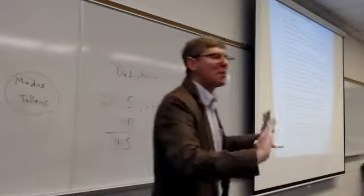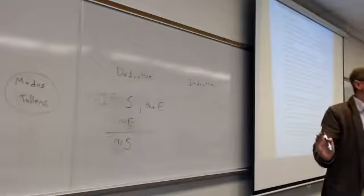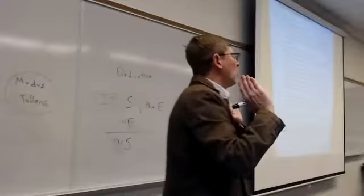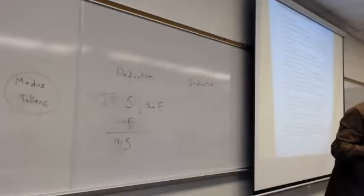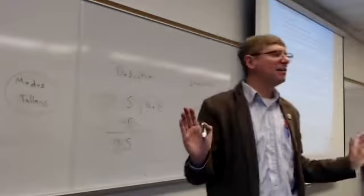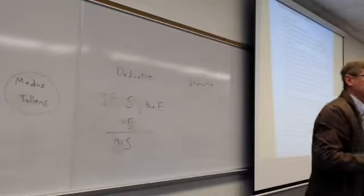I'll give you another example. If the government shutdown continues for a great deal longer, then there will be severe economic consequences. It's likely to continue for quite a bit longer. Therefore, there's likely to be severe economic consequences. This is the same structure. This is modus ponens. If the premises are clearly true, the conclusion will follow by logical necessity.